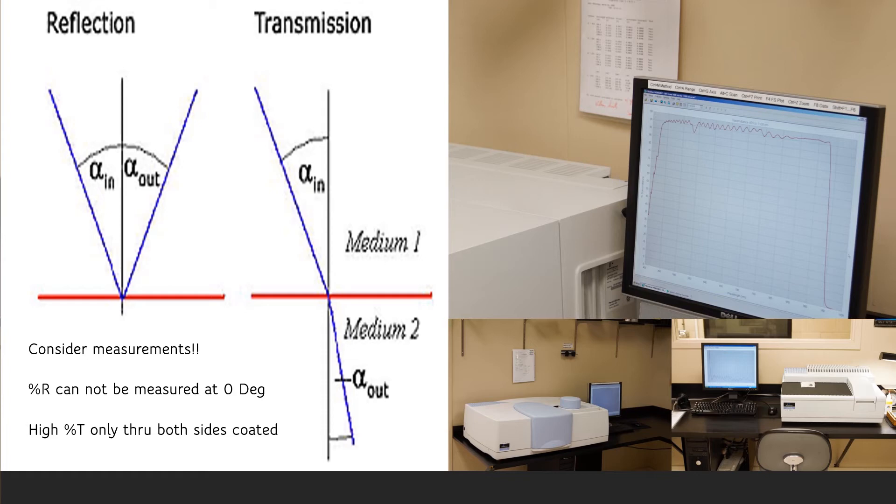For optics coated on one side only, such as achromat elements, high transmission values cannot be measured due to uncoated surface reflection losses. These should be specified in reflection to allow for straightforward measurements. Very high or very low reflection values can be challenging to obtain accurately, and specialized measurements such as laser ring down may be required for demanding applications.